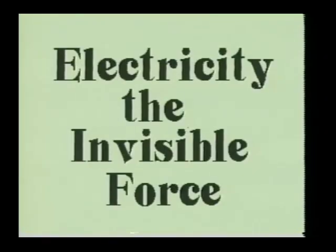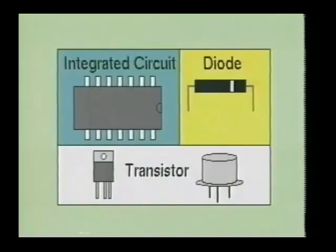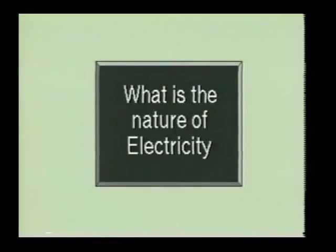All matter has electrical properties. This is why engineers over the past several decades have been able to develop thousands of devices that generate, store, control, and switch electricity. The diode, transistor, and integrated circuits are but just a few of these devices. The best way to understand electricity as an essential ingredient of matter is to understand the nature of every element, the atom.